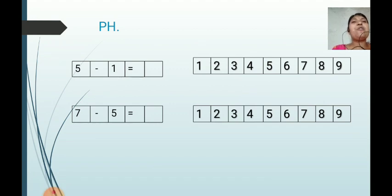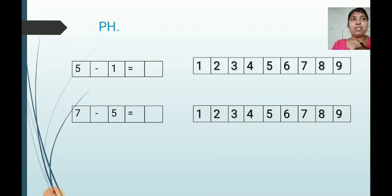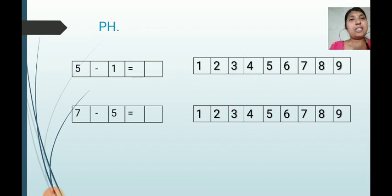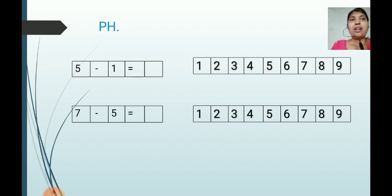There are 2 more examples — 5 minus 1 and 7 minus 5 — that are your homework. You have learned how to subtract on the number strip, so solve these examples by yourself.